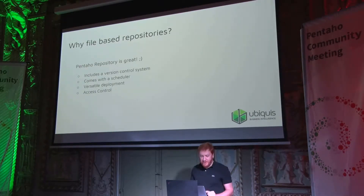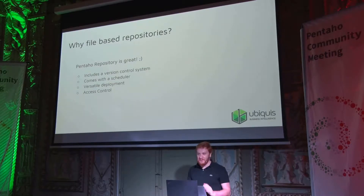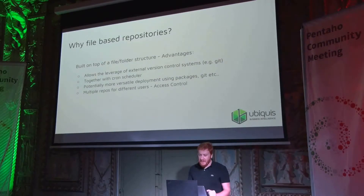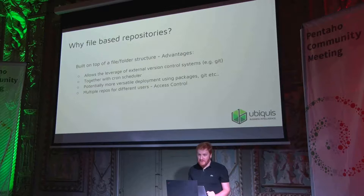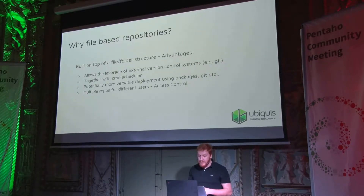The Pentaho repository is great, and just like Hitachi Vantara's marketing tools say, it includes a great version control system, scheduler, great deployment, and everything is fantastic. But there are some advantages to using file-based repos, which is that you might want to leverage some external tools for version control, for instance Git, and this is sort of what we find sometimes.